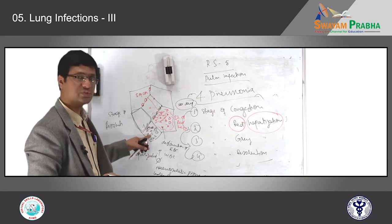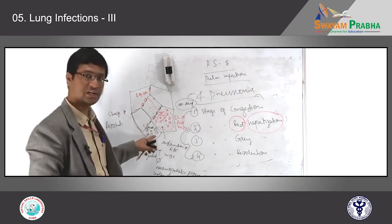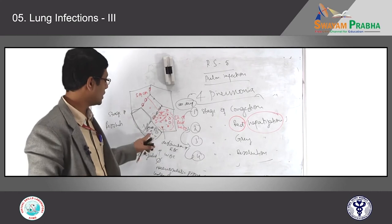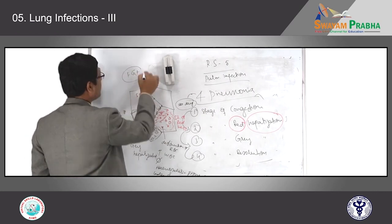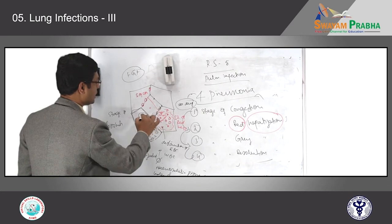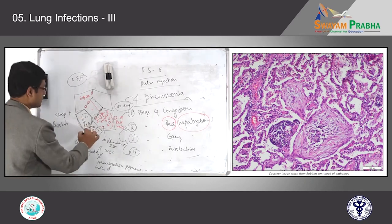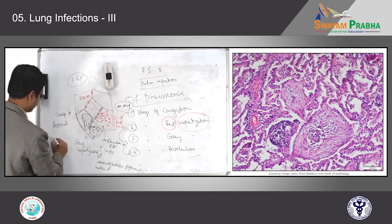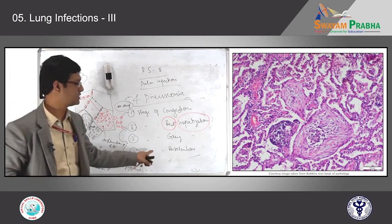When it heals, the WBCs secrete lots of cytokines. These cytokines act on fibroblasts present in the alveolar interstitium. Fibroblast growth factor causes fibroblast proliferation, and in the intermediate stage these elongated fibroblasts fill up the alveolar lumen — this presence of fibroblasts in the alveolar lumen we call organization. Gradually this will be cleared, completing the stage of resolution.